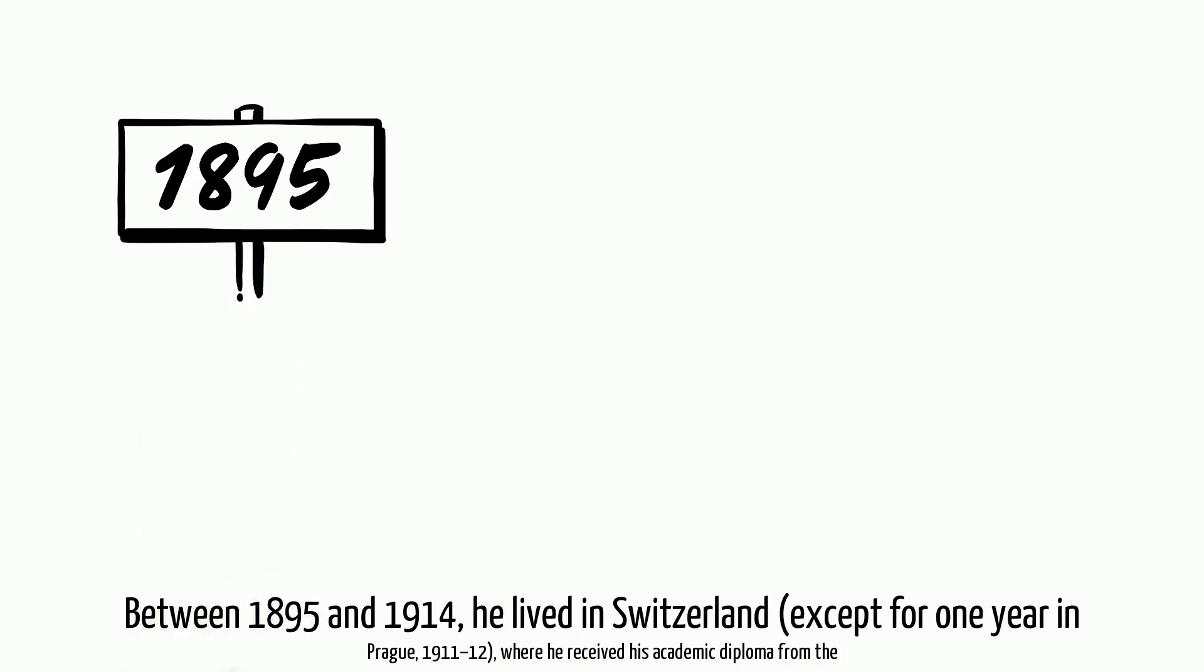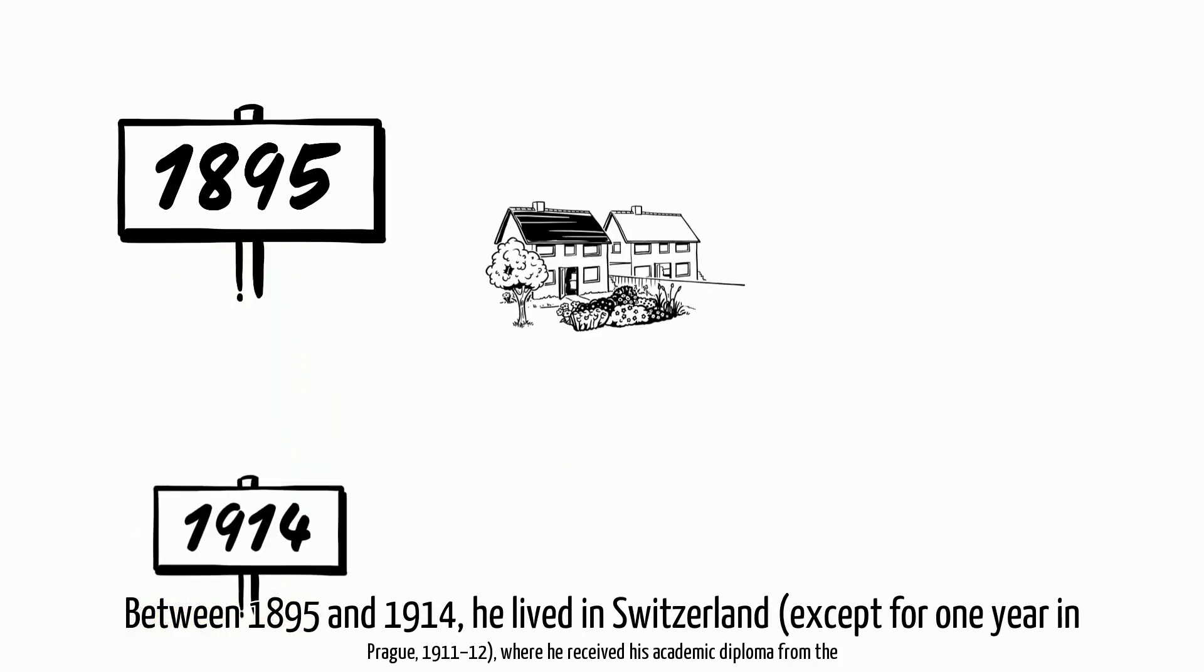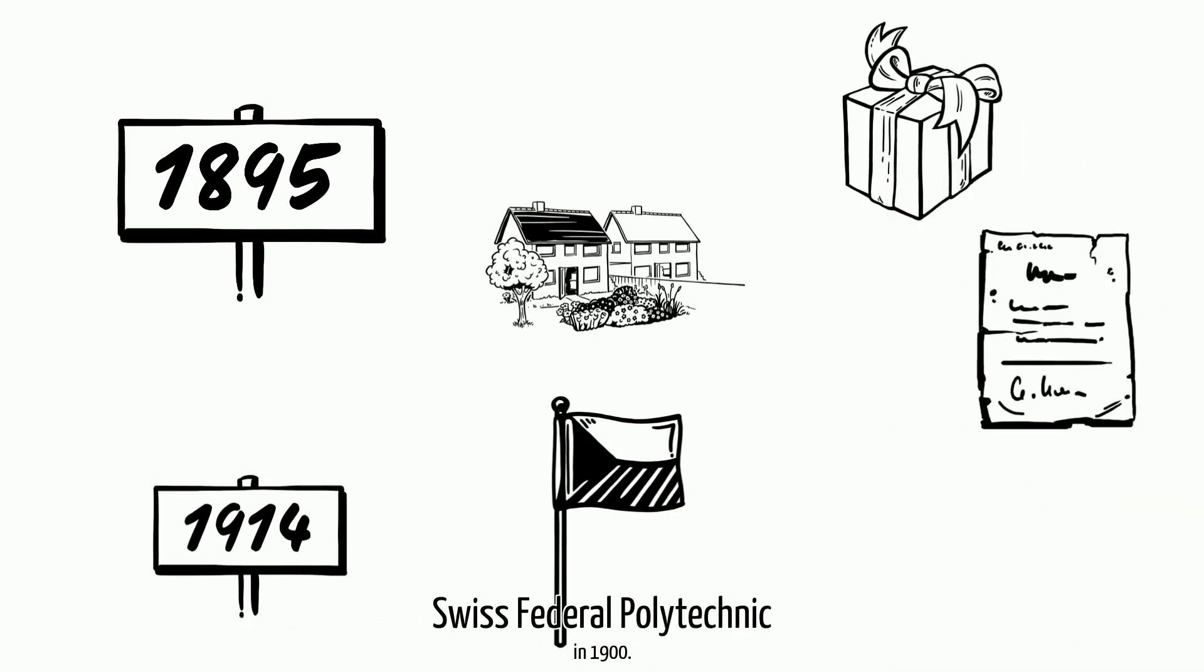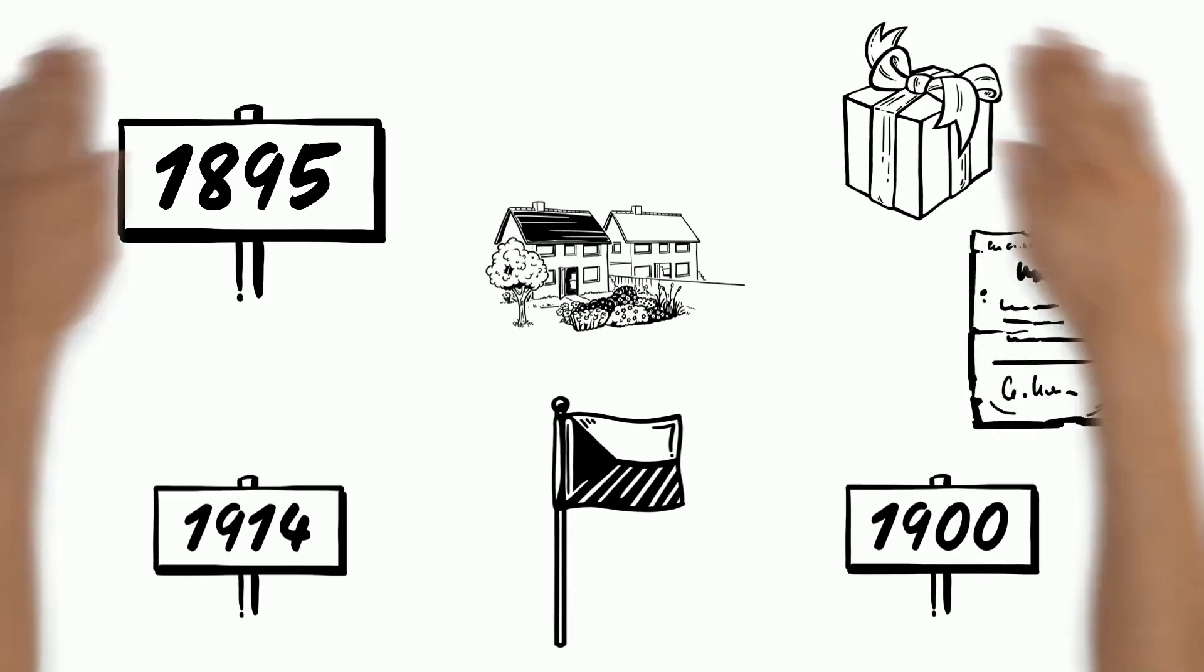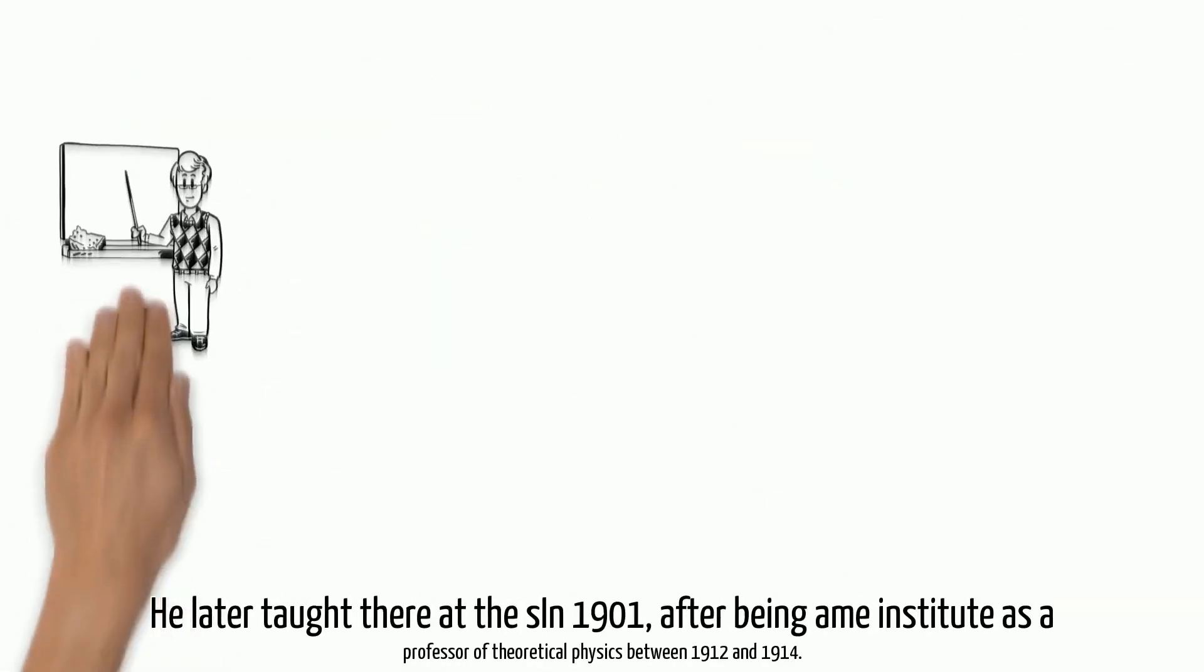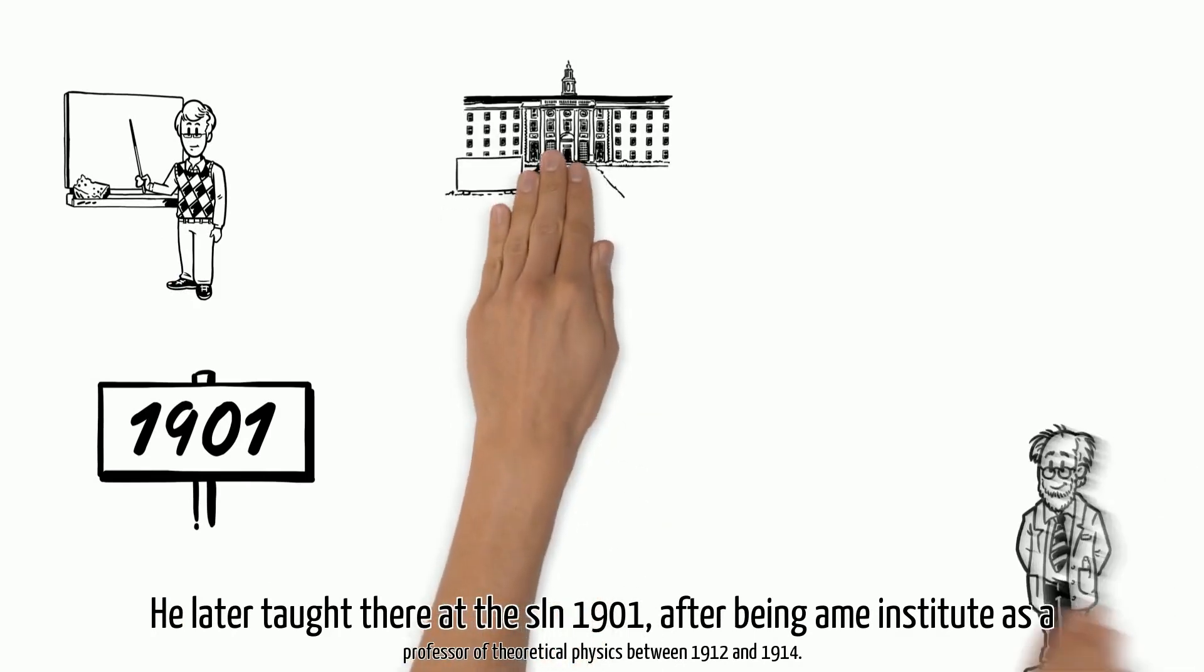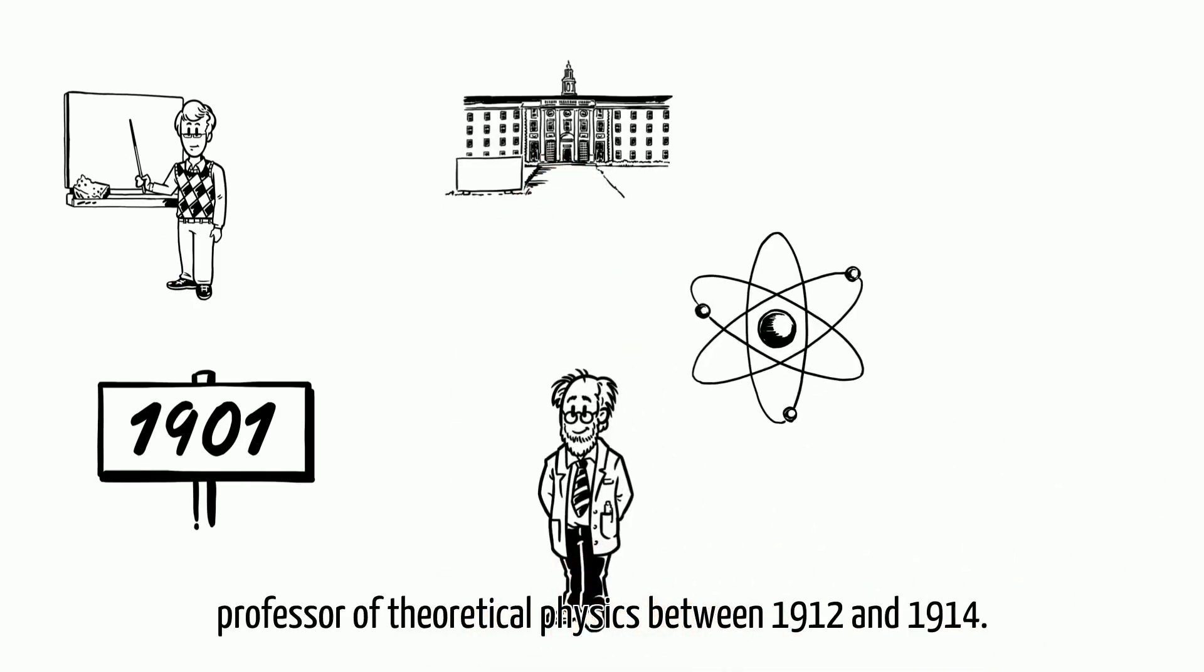Between 1895 and 1914, he lived in Switzerland, except for one year in Prague, 1911-1912, where he received his academic diploma from the Swiss Federal Polytechnic in 1900. He later taught there as a professor of theoretical physics between 1912 and 1914.